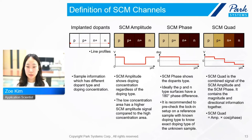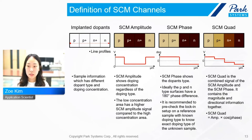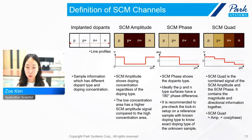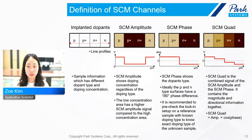To ease the complexity of analyzing both amplitude and phase, there is an SCM quad channel — the quadrature signal of the detected raw data. The SCM quad signal gives both pieces of information in one image. If the signal is above zero, the sample is P-type; if it is below zero, the sample is N-type. A higher SCM quad value means the sample has low doping concentration, while a smaller value means the doping concentration is high. Note that whether P-type appears above or below zero can be changed by the lock-in amplifier setting, so it is not an absolute rule.